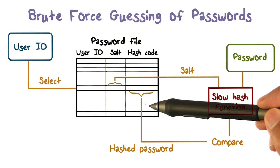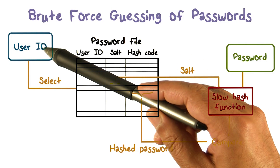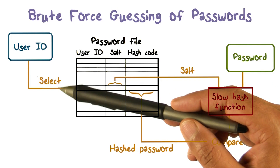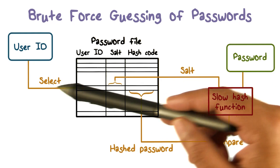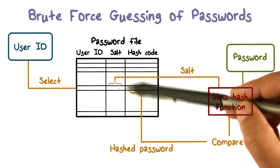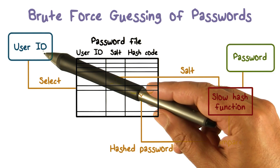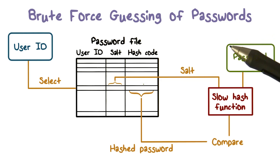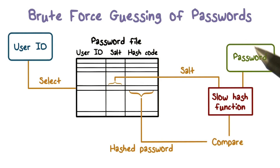To see how that is really done, let's just look at how Unix does it, for example. You provide a user ID and your password. We use the user ID to select the entry in the password file for this user. The salt is stored here, the hash value is stored here. This is sort of the data structure we keep.